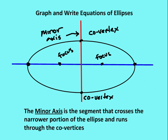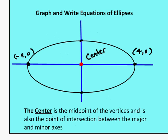The minor axis is a segment that crosses the narrower portion of the ellipse and runs through the co-vertices. The minor axis does not run through the foci — it runs through the co-vertices and also the center, through the narrower portion of the ellipse. The center is at the intersection of the major and minor axes, and it's also the halfway point between the vertices, the co-vertices, and also the foci.